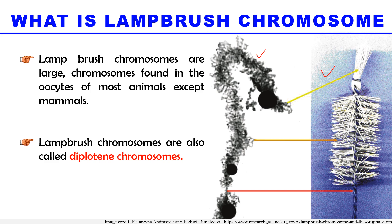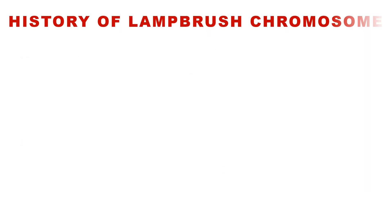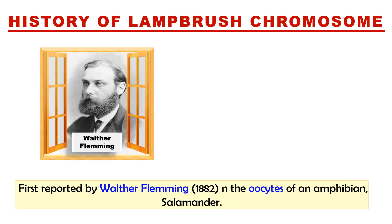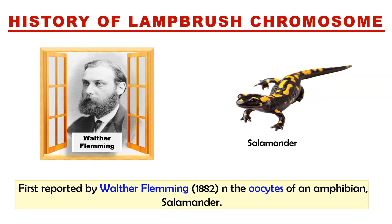Lampbrush chromosomes are also called diplotene chromosomes because they are formed during the diplotene stage of prophase I during meiotic cell division. They were first reported by Walther Flemming in 1882 in the oocyte of an amphibian, the salamander.